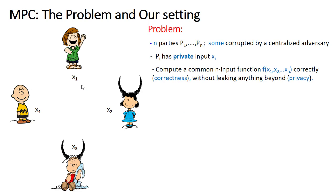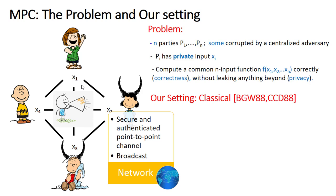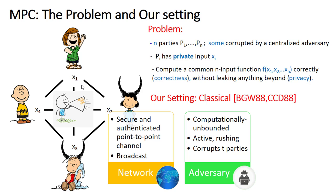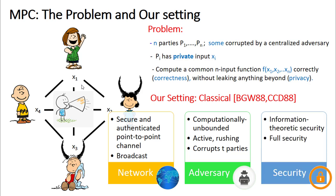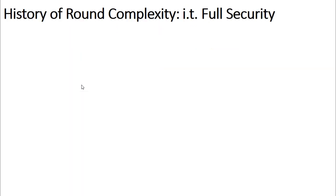MPC has been studied over various settings. We consider the classical setting of MPC as introduced in BGW and CCD88. We assume every pair of parties are connected by a secure and authenticated point-to-point channel, and there is a broadcast channel available. We consider an adversary that is computationally unbounded, active, rushing, and can corrupt T parties out of n parties. By tolerating a computationally unbounded adversary, we obtain information theoretic security, and we aim for full security or guaranteed output delivery.